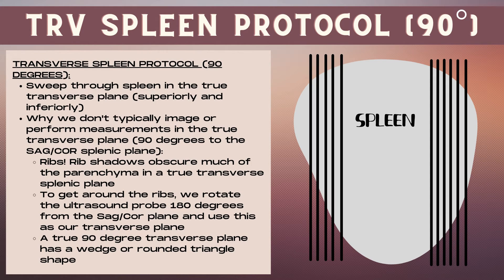Now let's talk about the 90-degree transverse spleen. In a perfect world this would be the plane for transverse spleen images. However, we don't typically perform measurements in the true transverse plane — 90 degrees to the sagittal or coronal splenic plane — because rib shadows obscure much of the parenchyma. So to get around the ribs, we rotate the probe 180 degrees from the sagittal or coronal plane, even though in actuality it's not a true transverse plane.